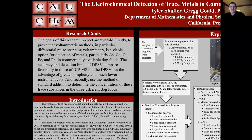The accuracy and detection limits of DPSV compare quite favorably to those of ICP-MS. However, DPSV has the advantage of greater simplicity and much lower instrument cost. Second, use the method of standard addition to determine the concentration of these trace substances in three different dog foods.